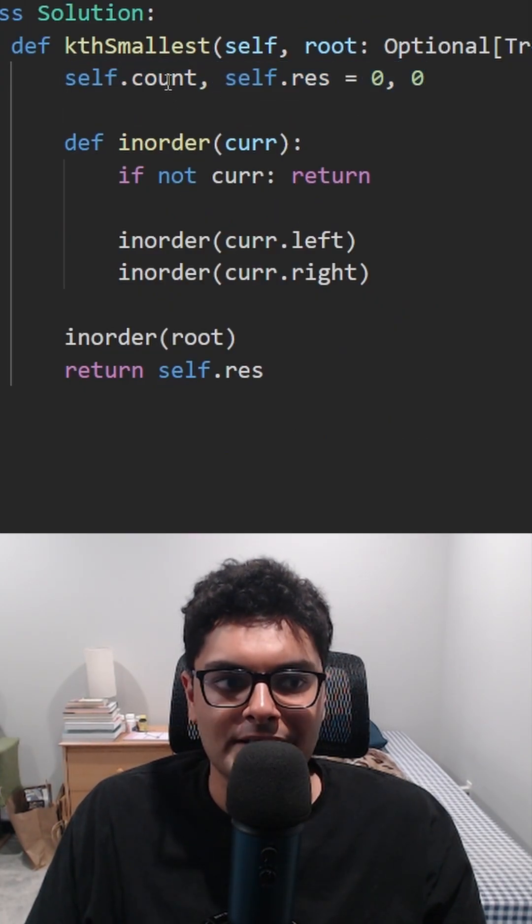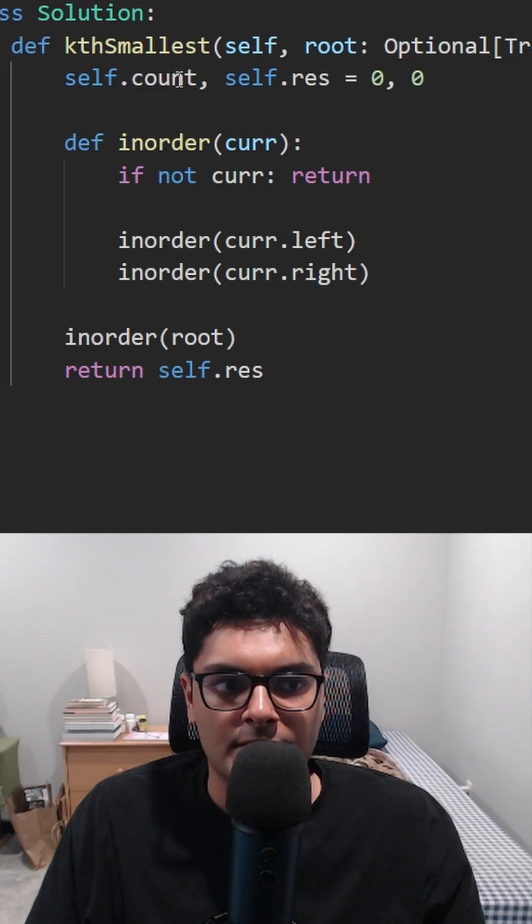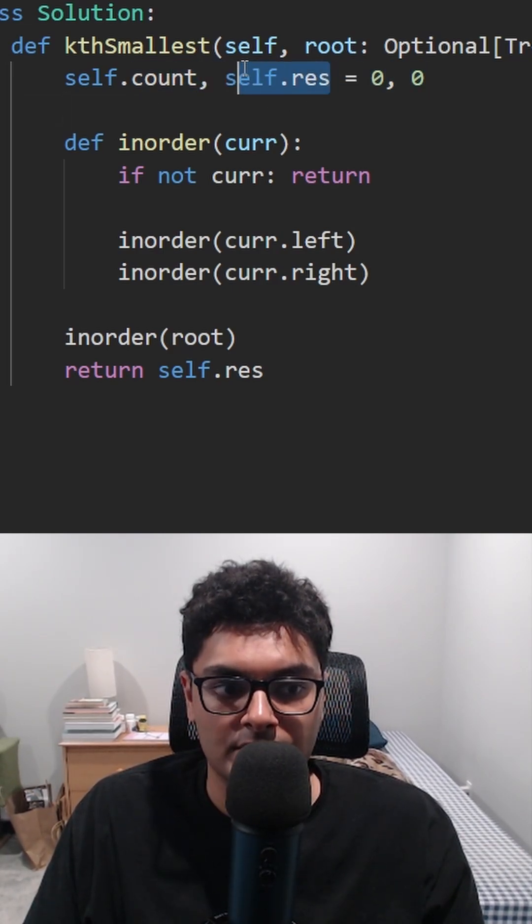I'm going to have two member variables. One is going to tell me the count, how many nodes we have visited, and this is going to tell me the result. So once we find the k-th node, we will assign the result to it.